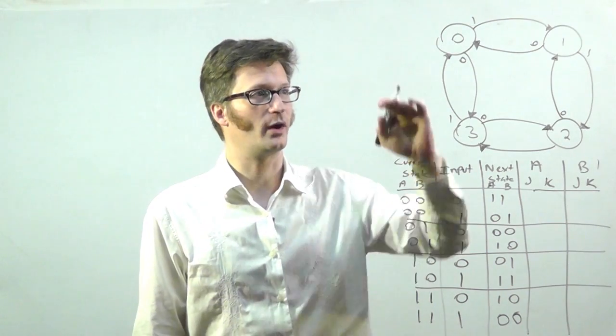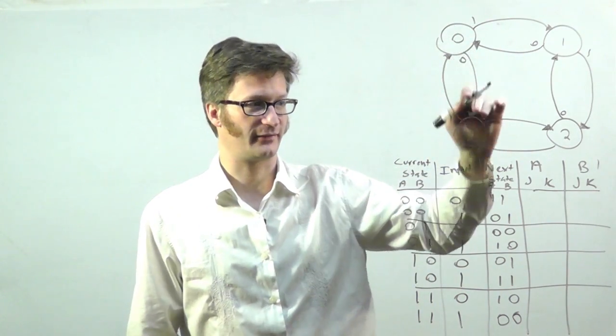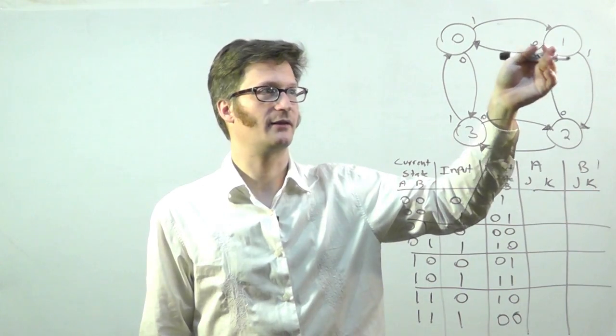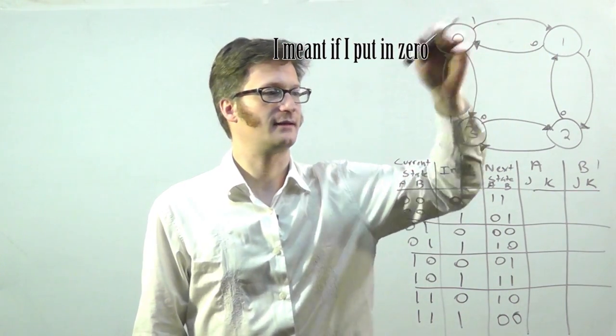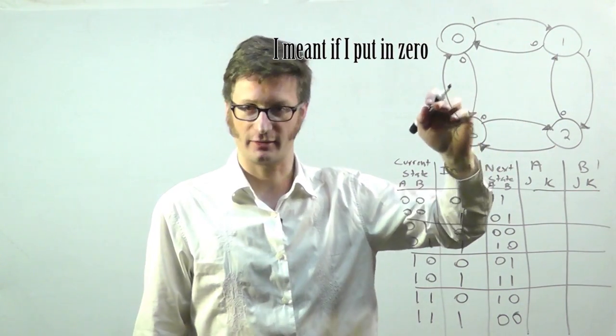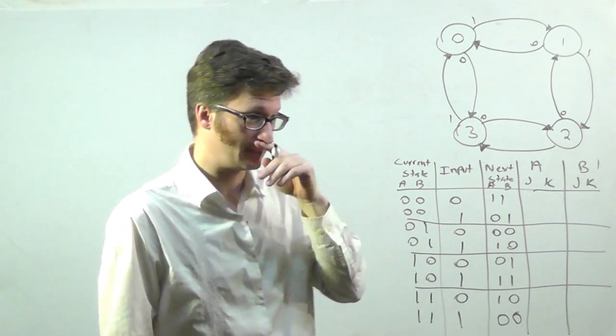If the input is one, it counts upwards until it hits three and then it wraps around zero, and if I put in one, it counts downwards until it hits zero and then it wraps around three.